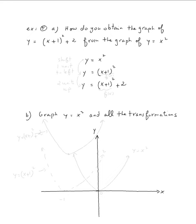To obtain the graph of y equal x plus one squared from the graph of y equal x squared, since there is plus one inside, you shift one unit to the left. So we're going to shift the graph of y equal x squared one unit to the left.